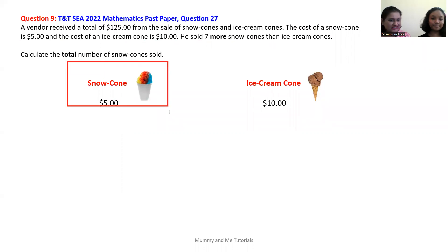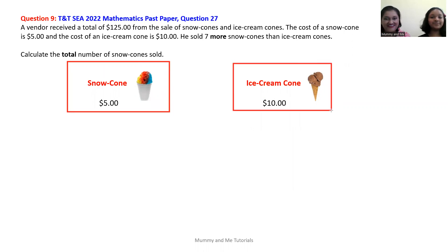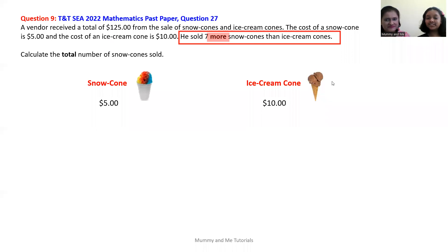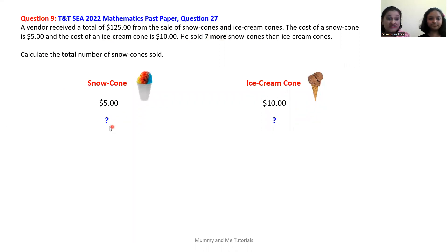So the cost of one snow cone was $5 and the cost of one ice cream cone was $10. But he sold seven more snow cones than ice cream cones. What does the word 'more' mean? The word more means that he sold seven additional snow cones. So it means he would have sold some amount of snow cones and some amount of ice cream cones, but the amount of snow cones sold was equal to the same amount of ice cream cones sold.